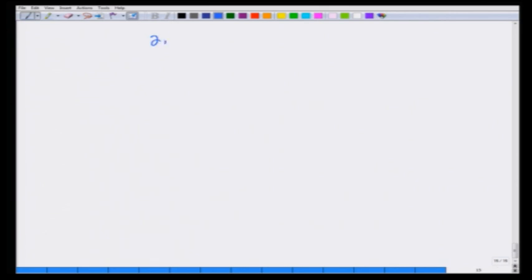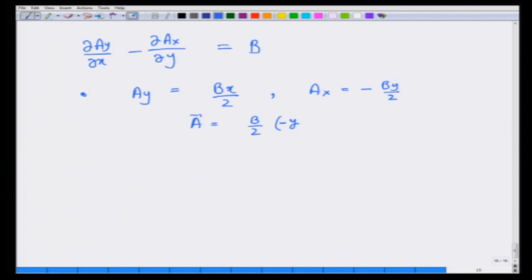So I want partial A_x over partial y minus partial A_y over partial x to be equal to B. You can immediately see there are three different possibilities. I can take A_y to be equal to B x by 2 and A_x to be equal to minus B y by 2. So that A vector is equal to minus B y by 2 in x plus B x by 2 in y direction, which I can write as B s by 2 phi with a minus sign. That is one possibility.